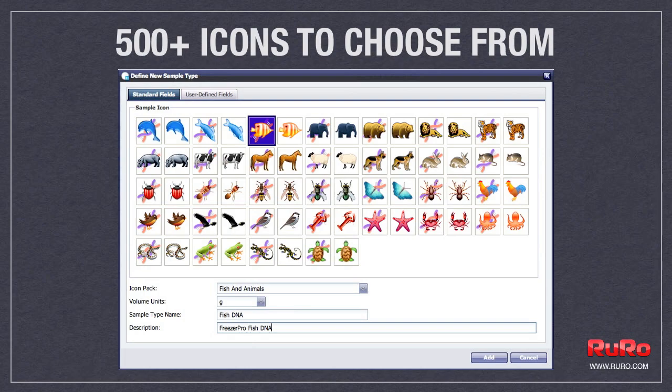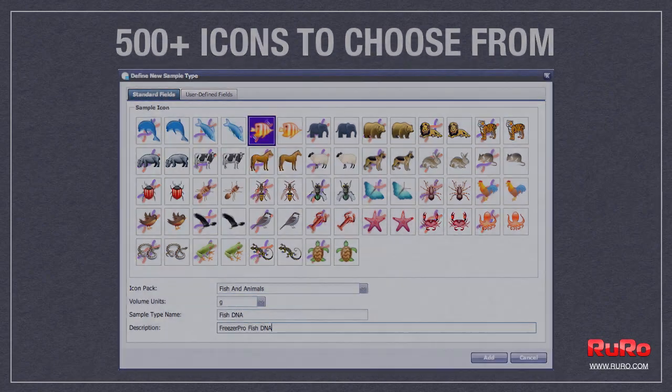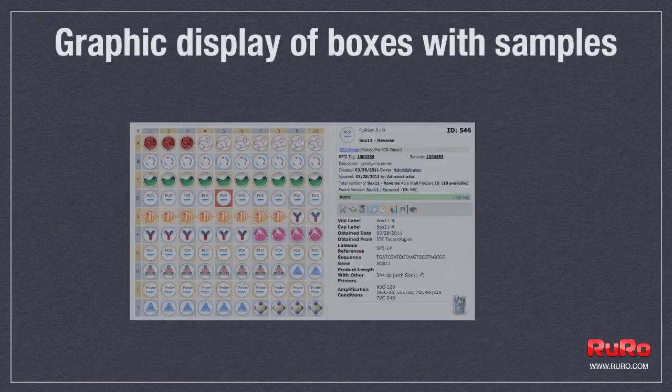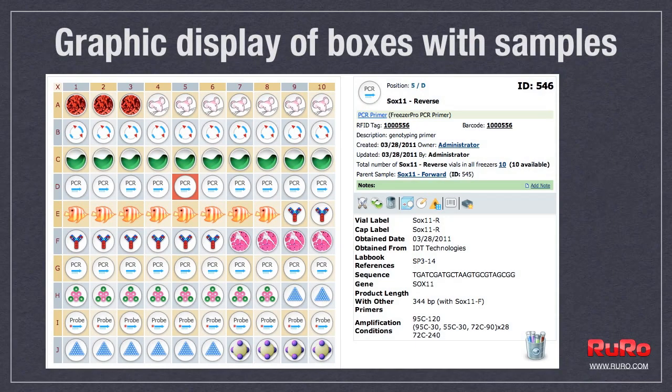Freezer Pro is a sample inventory system used by thousands of researchers worldwide in 29 countries and in seven different languages.